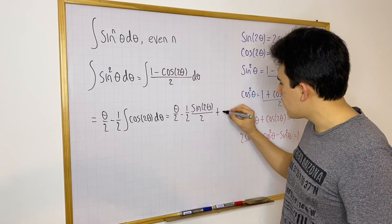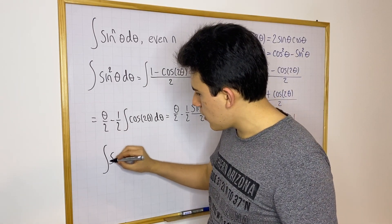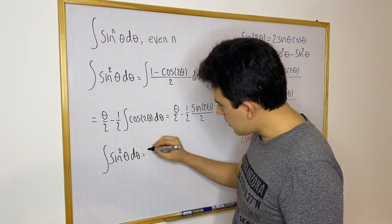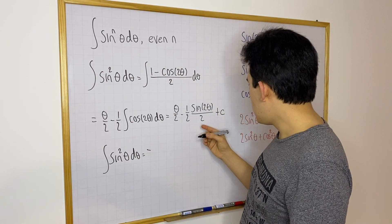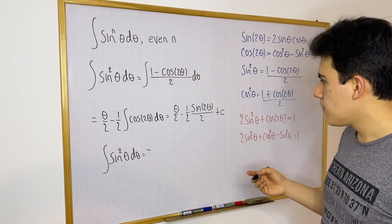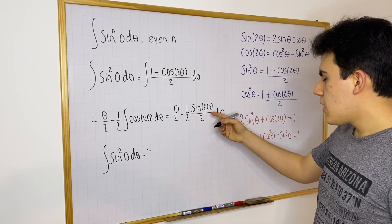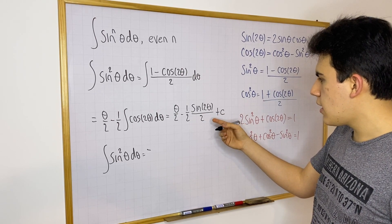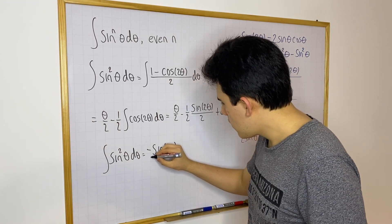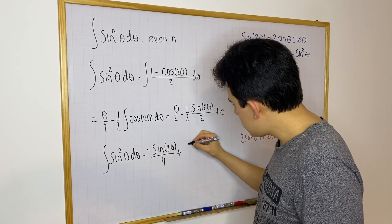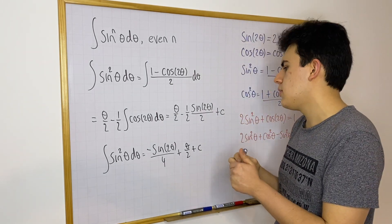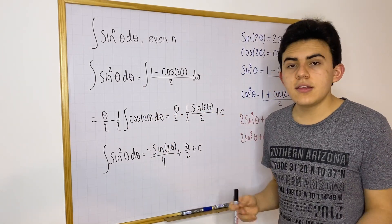In conclusion, and of course we can't forget plus C: the integral of sine squared θ dθ equals theta over 2 minus sine of 2θ divided by 4, plus C. This is the final answer for this integral. As you can see, it is really easy — the only thing you need to do is remember these formulas.